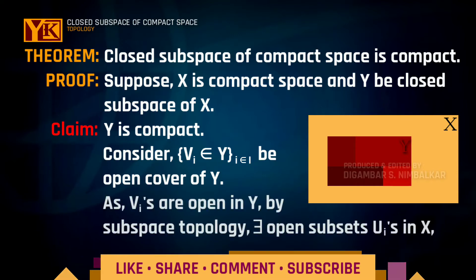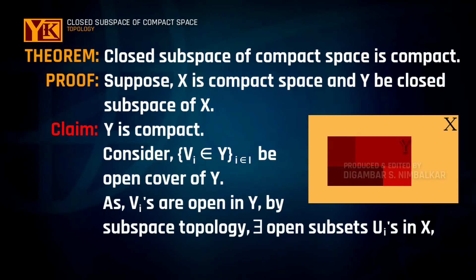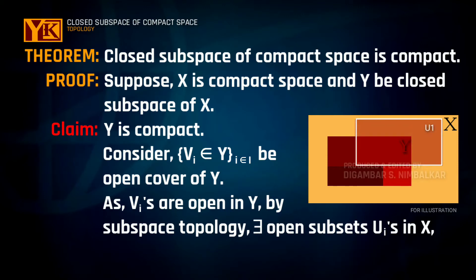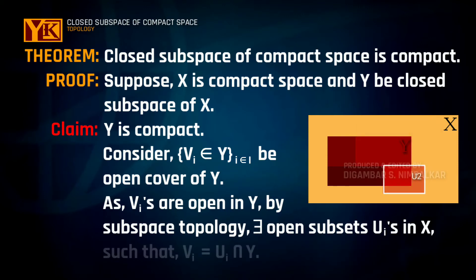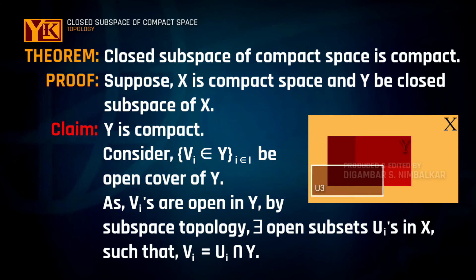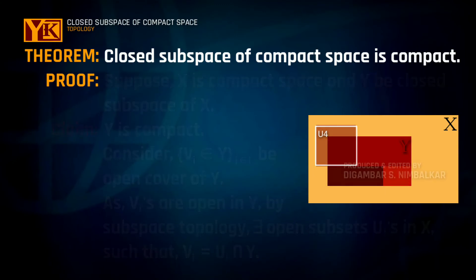By the definition of subspace topology, if we have Vi's as open subsets of Y, then there will exist open subsets Ui's in X such that Vi is equal to Ui intersection Y.